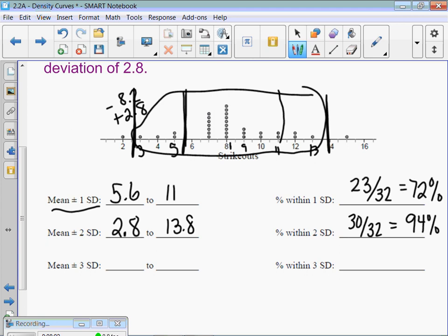And then, three standard deviations of the mean. So, now I've got to add another 2.8 to this. Gives me 16.6. Subtract another 2.8. Gives me zero. So, I'm going from zero to 16.6. That gives me all of the data in this lovely problem. So, I have 32 out of 32 dots or 100% of the data.